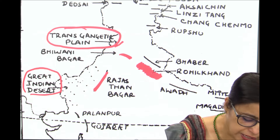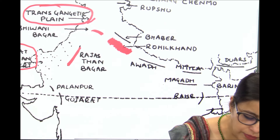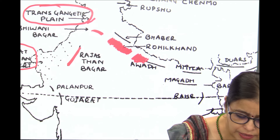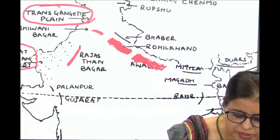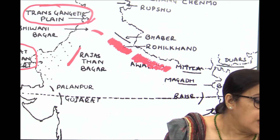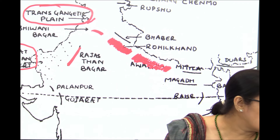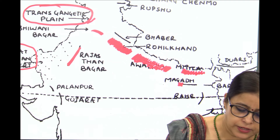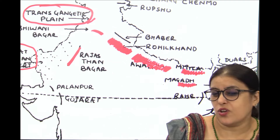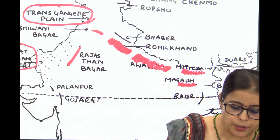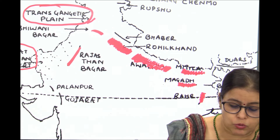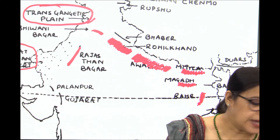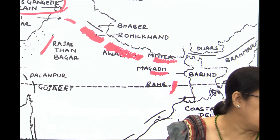Now you are marking Gangetic plain. Gangetic plain will include Rohilkhand plains and Awadh plains. Rohilkhand is the western, less extensive; Awadh is the eastern, more extensive. Mithila plains are the northern plains of Bihar. Magad plain is the southern plains of Bihar. Rar plain is of river Damodar. And deltaic plains of Hooghly.